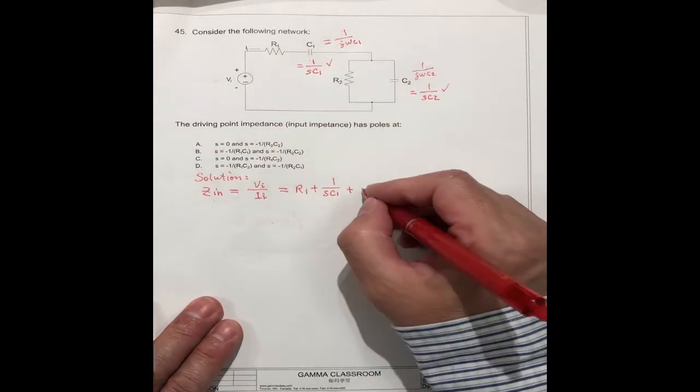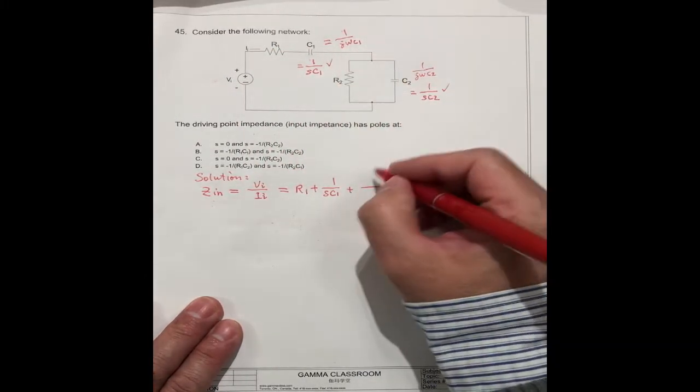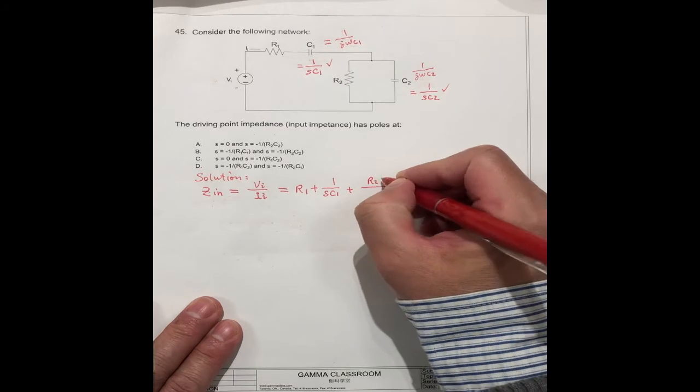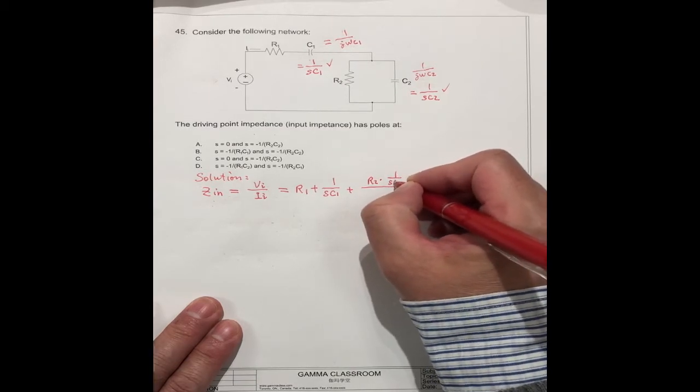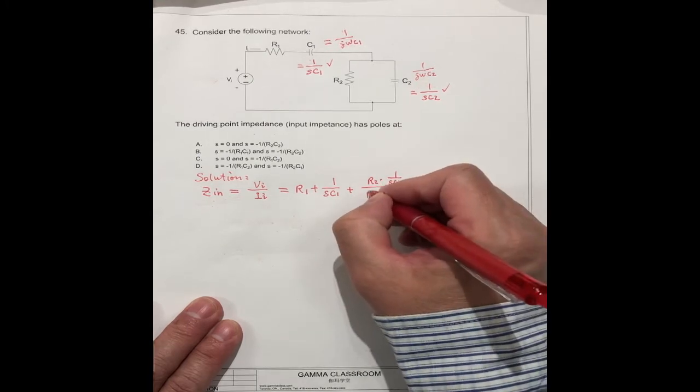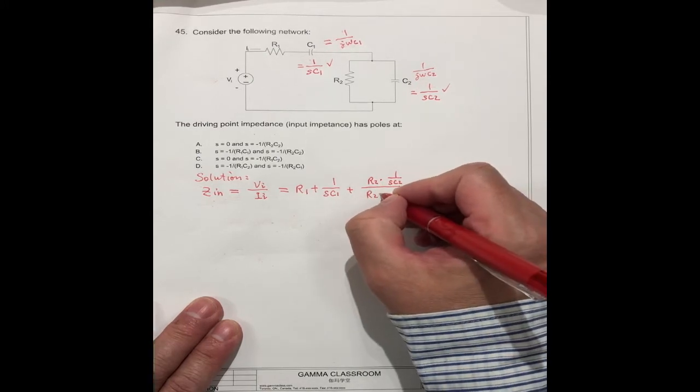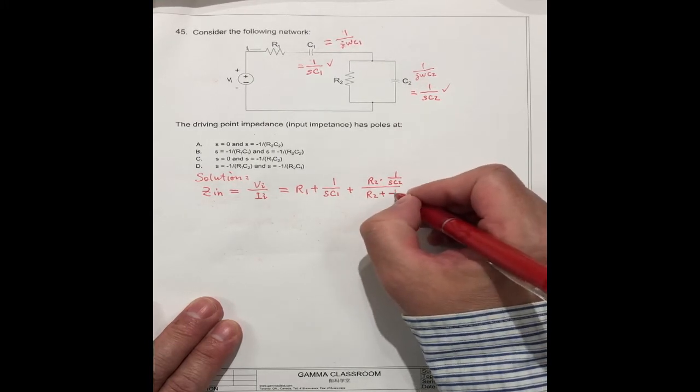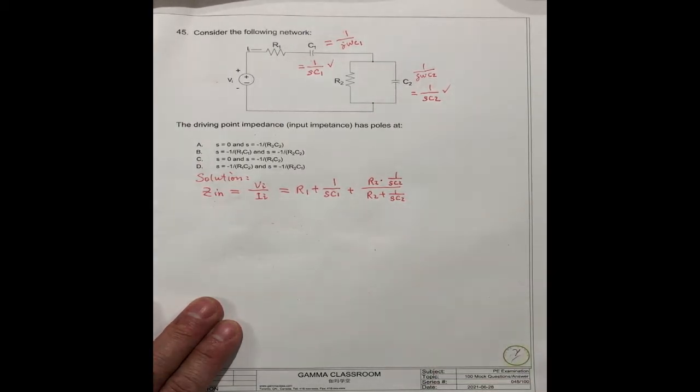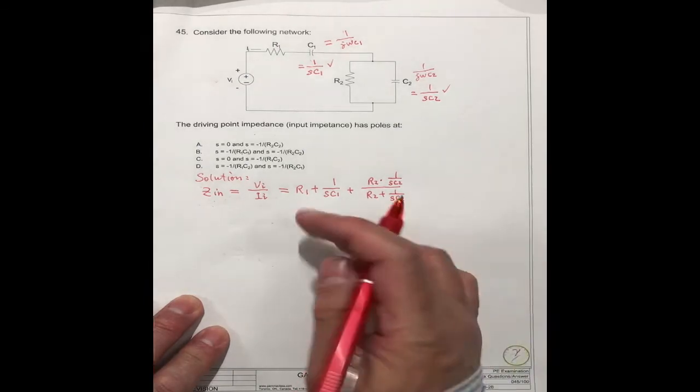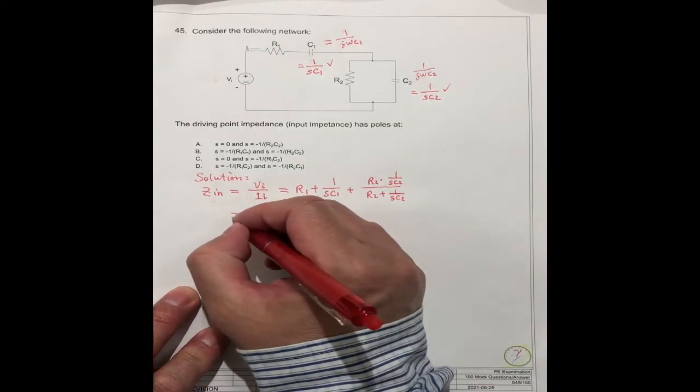Because this is a series, R2 times 1/(SC2) divided by (R2 plus 1/(SC2)). We just simplify this equation.